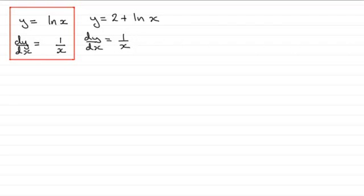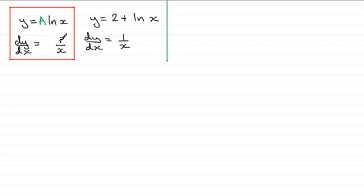What happens if we have a constant multiplying the natural log of x? If we have a constant multiplying any function of x — let's call it a — when it comes to differentiating, all we need to do is multiply that constant with the differential of our function of x. So a times 1 over x is going to be exactly the same as a over x.